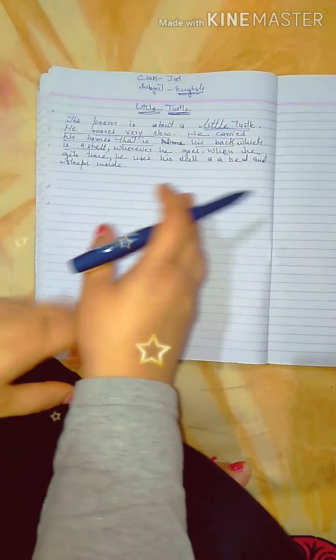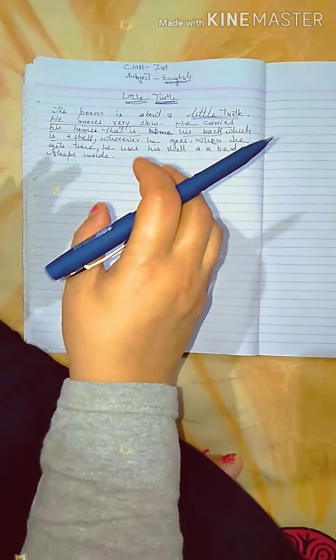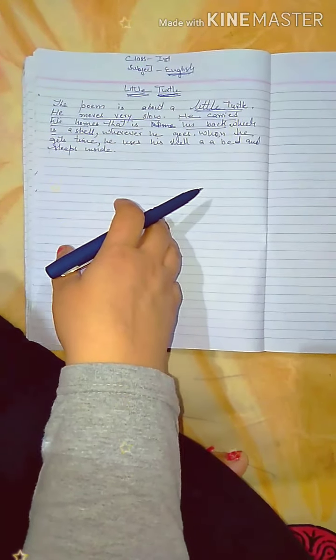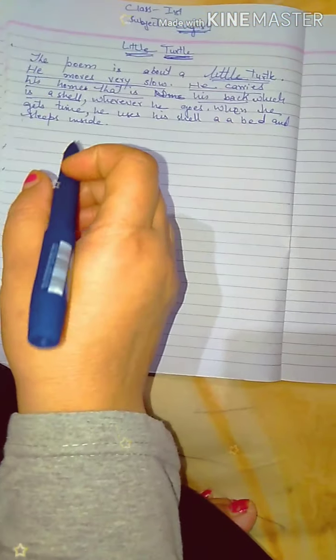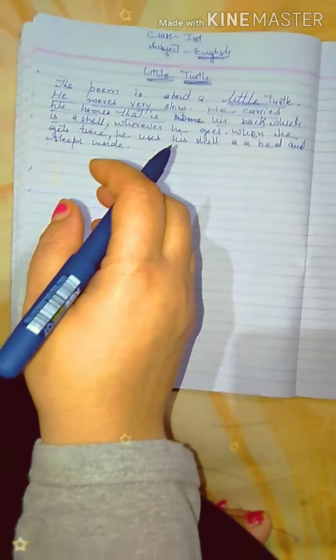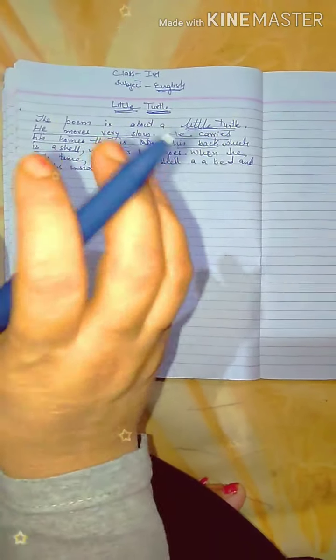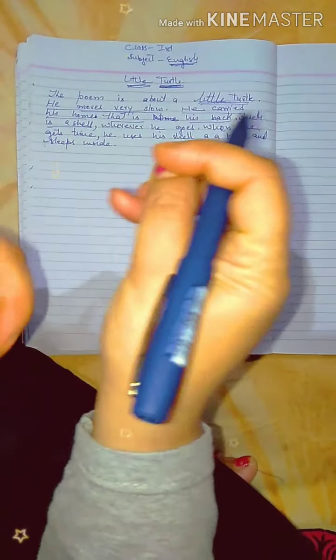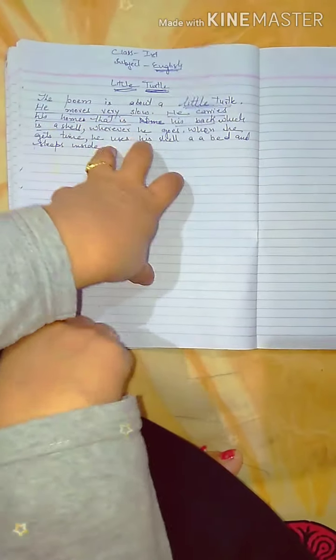He goes with his home, where is his back? His back, which is a shell. You know what? When he goes with his mind, he goes with his legs. He goes with his back. Let's see how the chart.